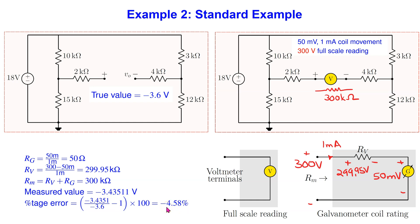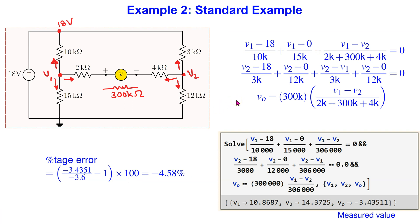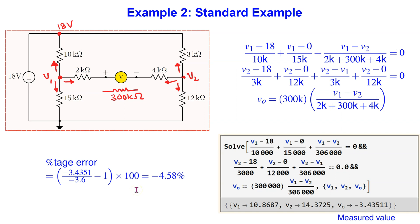We replace the voltmeter with its effective resistance and reanalyze the circuit to show that the measured voltage is minus 3.435 volts. This translates to an approximately minus five percent measurement error. For completeness, the intermediate steps are shown. The true value can be determined using the voltage division principle, and the measured value using the node voltage method. The circuit equations are shown and can be solved using a calculator or Mathematica.